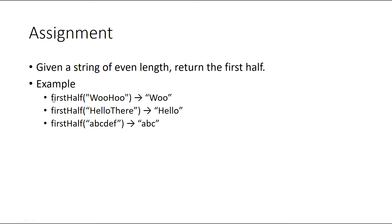I have a couple of examples here. We have the method firstHalf and we pass in a parameter string — for example, 'woohoo' — and we only want the 'woo' portion returned. Another example: 'hello' is only going to return the first half of the string. And if we pass in 'ABCDEF' we would only get 'ABC' back.